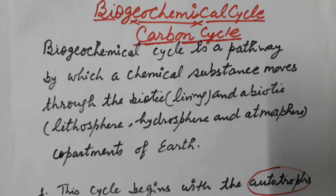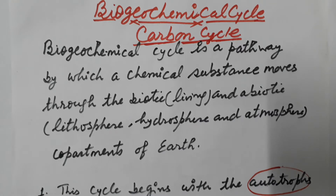Carbon is also found in nucleic acids like RNA and DNA, and in vitamins. The endoskeleton and exoskeleton of various animals are also formed from carbonate salts. If we look around, there are various substances like plastic and alloys in which carbon is present.